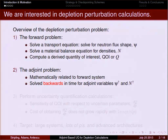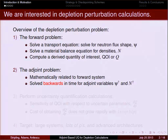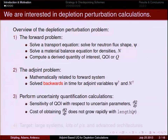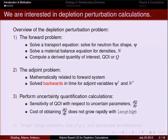The adjoint problem is mathematically related to the forward problem — it's coupled to the formulation of the forward problem. A key feature, and something important for what I talk about today, is that it's solved backwards in time for adjoint variables psi-dagger and n-dagger. The fact that we have to solve it backwards in time introduces computational challenges, which is the point of the schemes I'm going to discuss. Step one: solve the forward problem. Step two: solve the adjoint problem. Step three: perform uncertainty quantification — specifically, compute the sensitivity of our quantity of interest with respect to a list of uncertain parameters p.